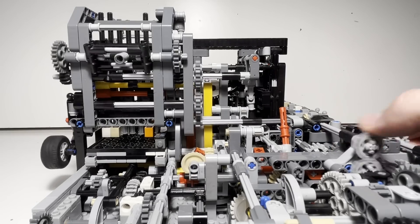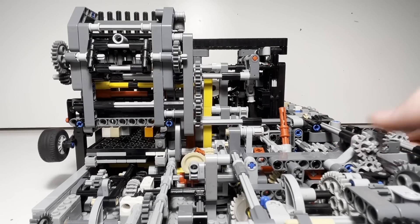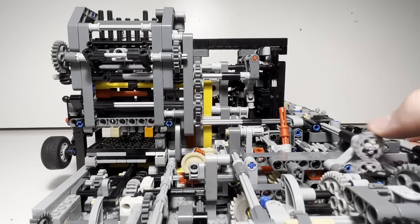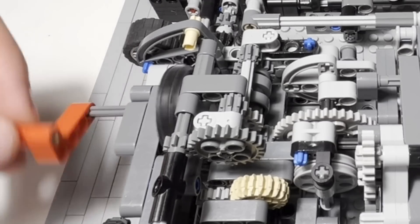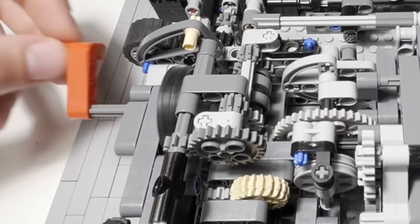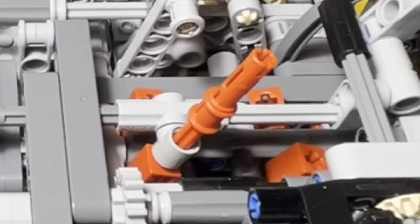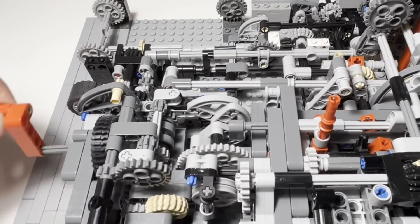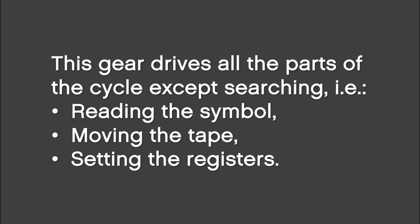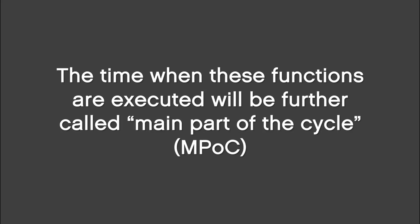The mechanism is controlled by this axle. Searching switch number 2 has also a second function. When it's on, rotating the input doesn't do anything visible here, but when we turn it off, the big gear starts rotating. This gear drives all the parts of the cycle except searching, that is reading the symbol, moving the tape and setting the registers. The time when these functions are executed will be further called main part of the cycle or MPOC. I made a sacred name because we're gonna use it frequently.